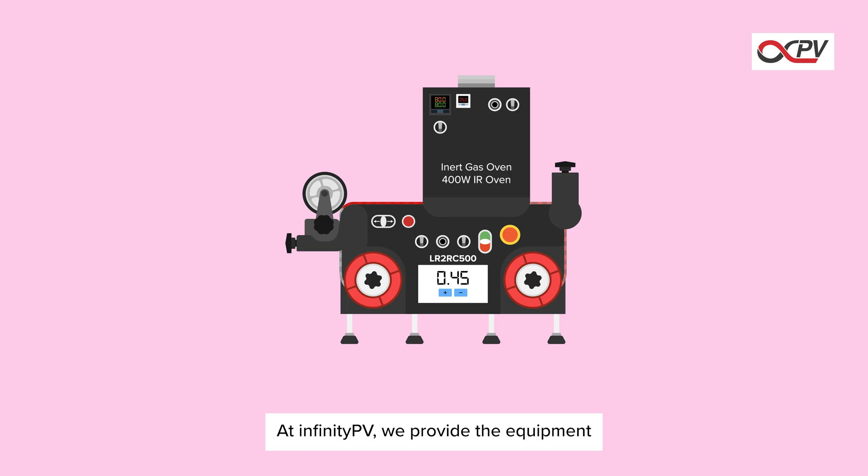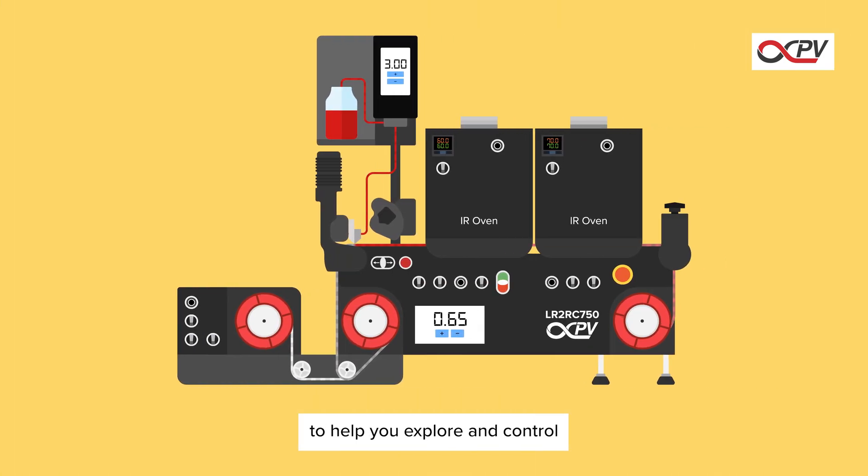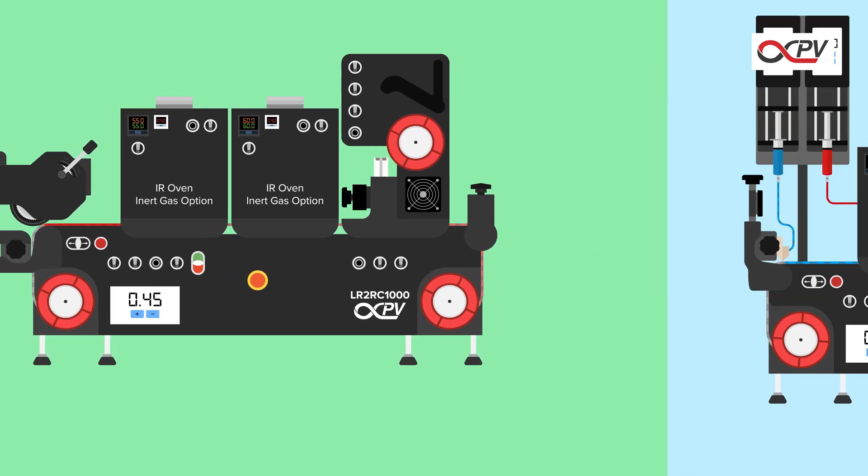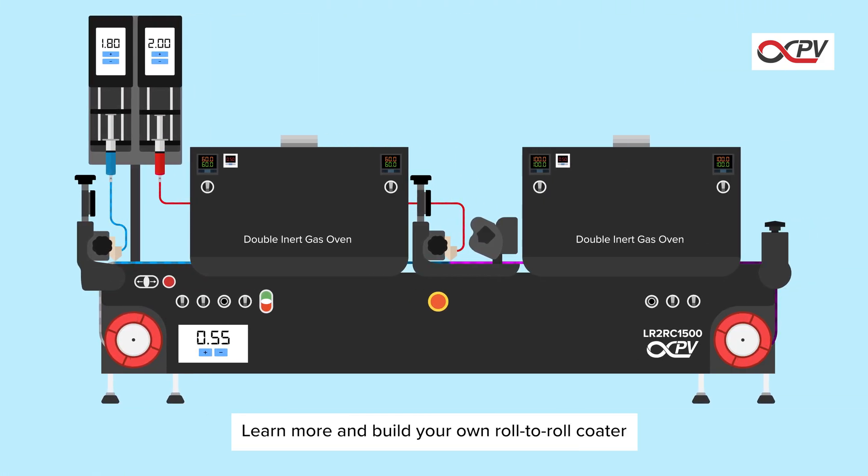At InfinityPV, we provide the equipment to help you explore and control every step of the roll-to-roll process, from early research to advanced lab-scale development. Learn more and build your own roll-to-roll coater at infinitypv.com.